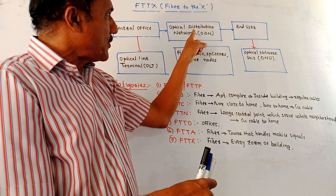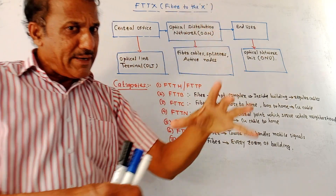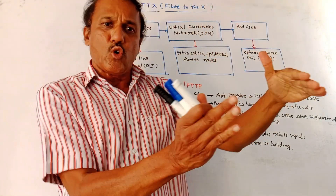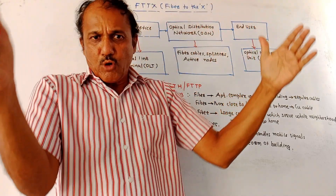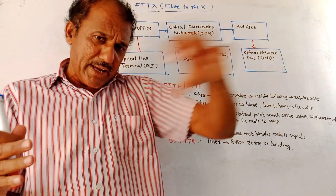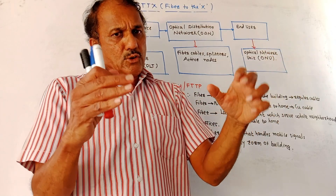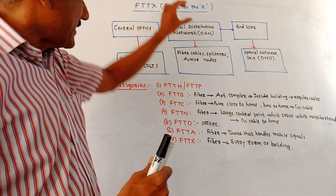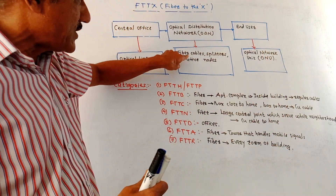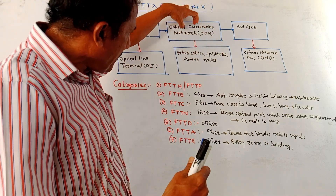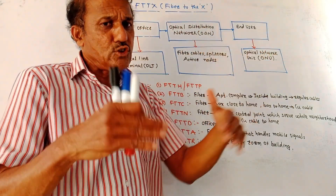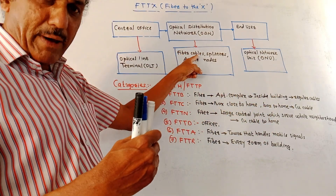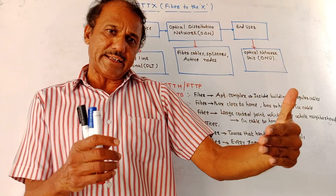Next is the Optical Distribution Network, or ODN. As the name indicates, there is a main fiber optic cable — like a main road — that is divided into smaller roads, giving connections to multiple users. This is the distribution network, which consists of fiber cables through which the signal passes. There are two subcategories within ODN.